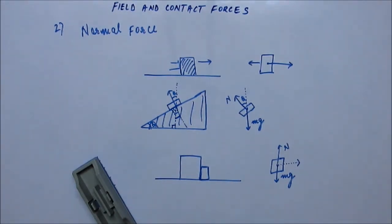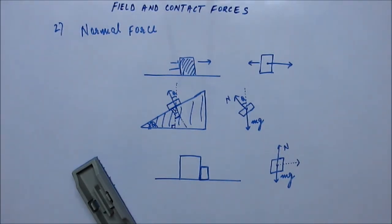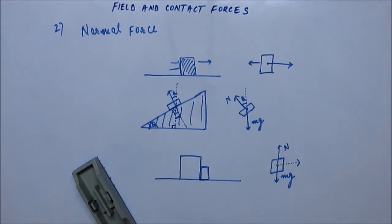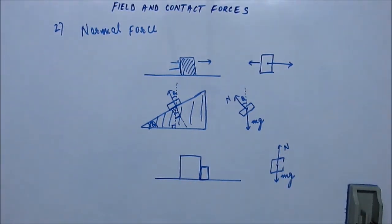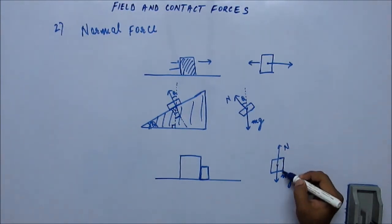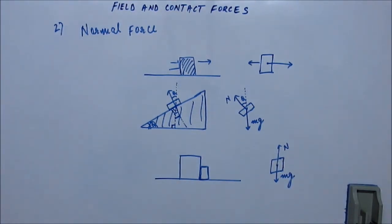If the normal reaction is on the right-hand side, there is no force to balance it on the left, so the block would start to move to the right — it is no longer in equilibrium because there is a net external force. As per Newton's first law it will not remain at rest. Since the block is in equilibrium, there must be no external force, which means there is no normal reaction in the horizontal direction.